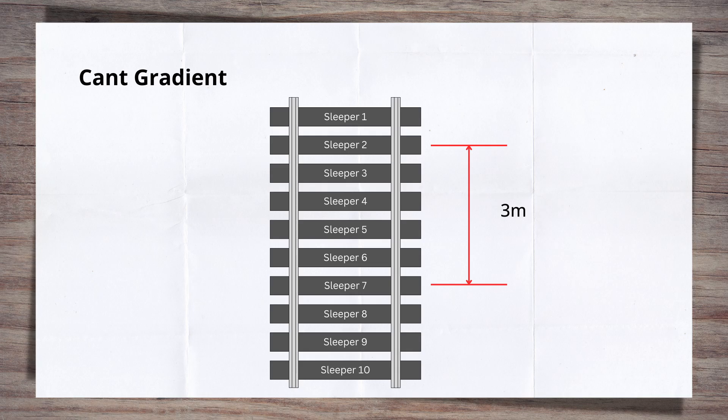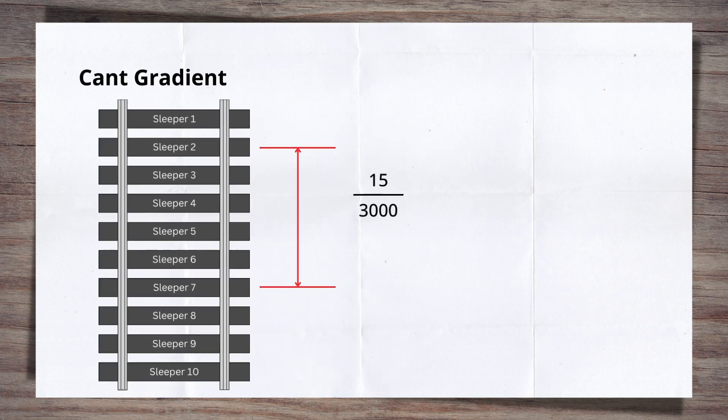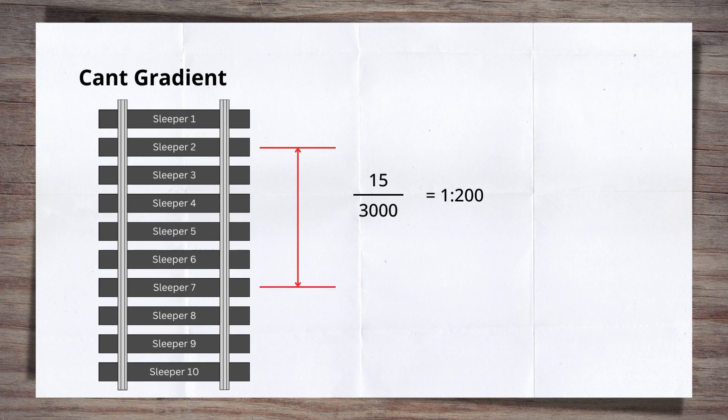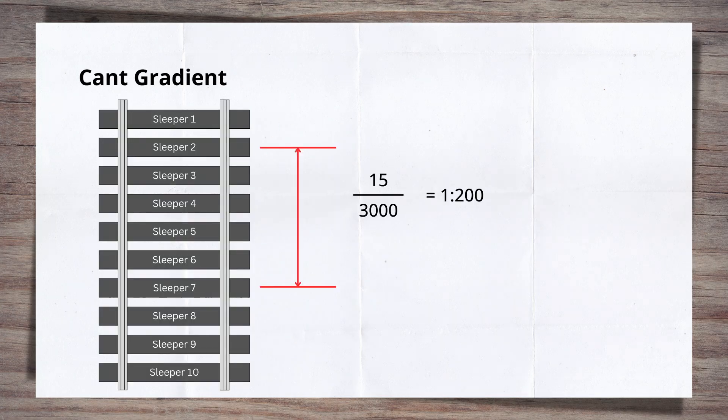Twists are quantified in gradients over three meters, which is about five sleepers. So for example, 15 millimeters of twist is a one in 200 twist, which in the UK carries a 14 day rectification period.